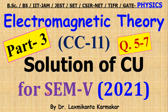Hello, welcome everyone. This video is Part 3 for the solution of Electromagnetic Theory CC 11 paper, first semester 5 of University of Calcutta BSc Physics Honours. The previous two parts are already completed for question numbers one to four. Today I want to discuss question numbers five to seven. If you want to watch previous lectures or previous year solutions of Calcutta University Physics, links are given in the description box.